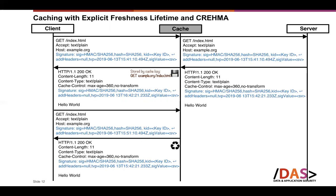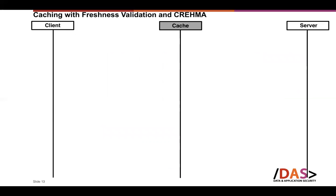To check signature freshness, the client takes the time-variant parameter from the signature — which is a timestamp — and adds the 360 seconds from the max-age value to that timestamp. If the result of this addition is a time in the future compared to the current time, then we can say that this response has a valid signature freshness, meaning it is a legitimately cached response and not a replay attack.